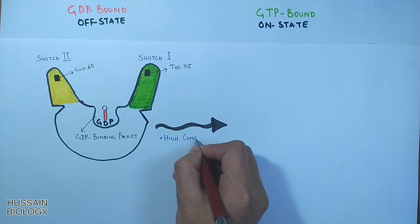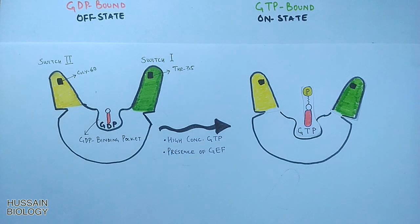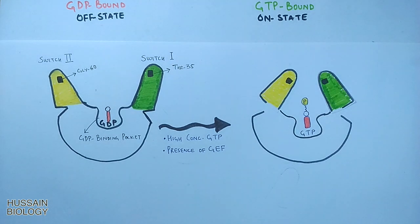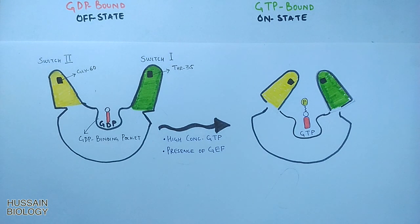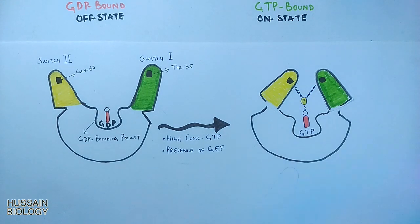When there is high concentration of GTP or when there is GEF activity, the GEF kicks off the GDP and replaces it with GTP, as shown in the animation. Now we have GTP bound, and this GTP has a terminal phosphate — that's the gamma phosphate — which brings about a conformational change within the G-protein. The switch1 and switch2 are brought inwards, and this terminal phosphate interacts with switch1 and switch2 through glycine and threonine residues, as shown in the diagram.